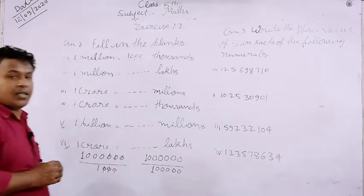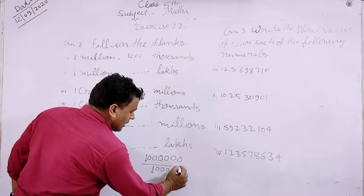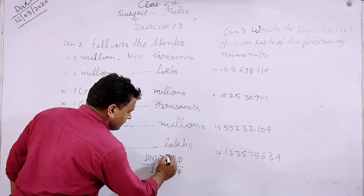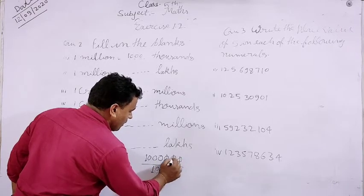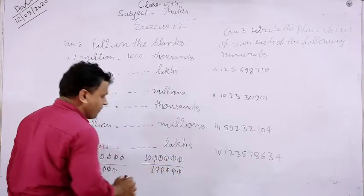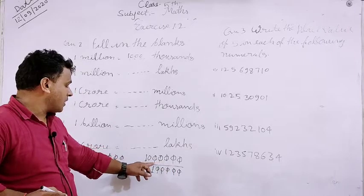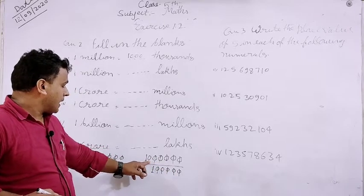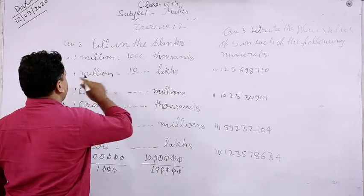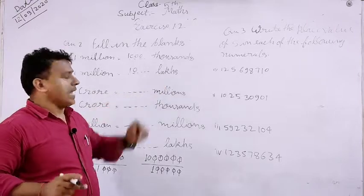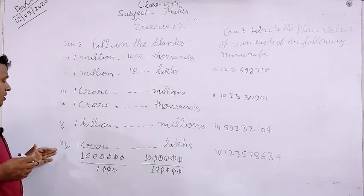Indian System mein ten thousand ke baad lakhs aata hai. Same us hi tarah se zeros ko cancel kiya — pehle niche ke five zeros cancel, upar ke bhi five zeros cancel kar diye. Toh aapko kya mila — ten. You get ten. You will fill up here: ten, means one million equal to ten lakhs. Ten lakhs equal to one million. As like this, you can solve from third to sixth.